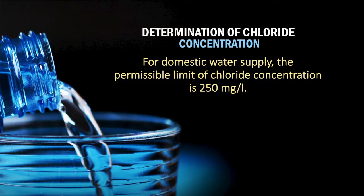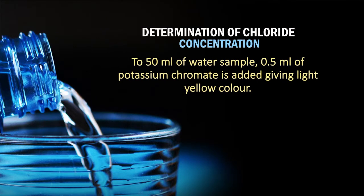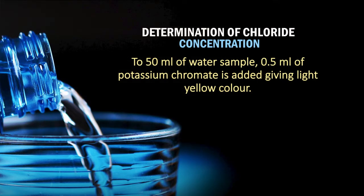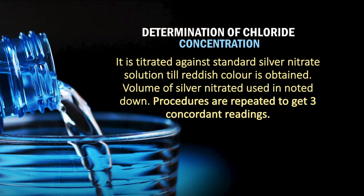For domestic water supply, the permissible limit of chloride concentration is 250 mg per liter. To 50 ml of water sample, 0.5 ml of potassium chromate is added, giving a light yellow color. It is titrated against standard silver nitrate solution until a reddish color is obtained. The volume of silver nitrate used is noted down. Procedures are repeated to get three concordant readings.